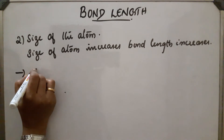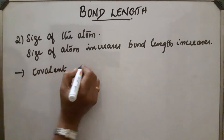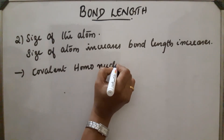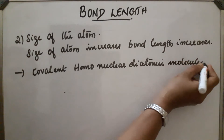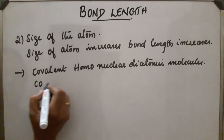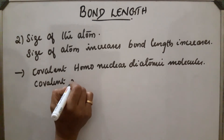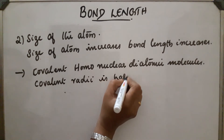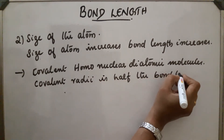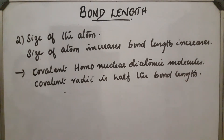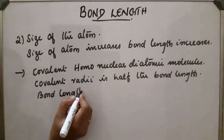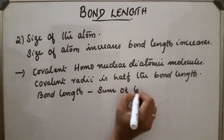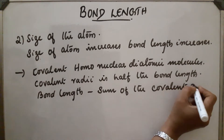In the case of covalent homonuclear diatomic molecules, the covalent radius is half the bond length. So bond length of such molecules will be the sum of the covalent radii of the two bonded atoms.